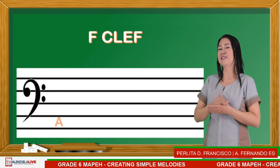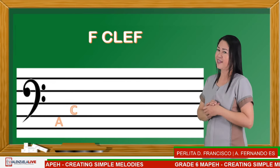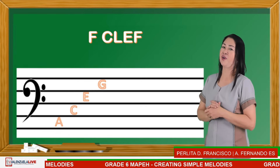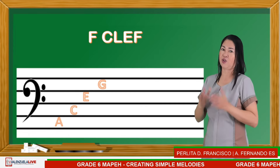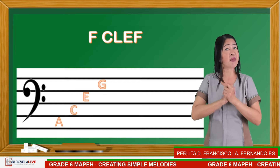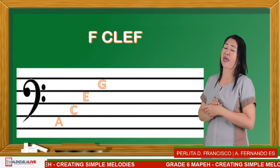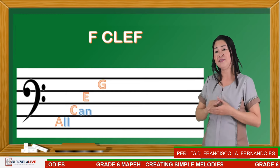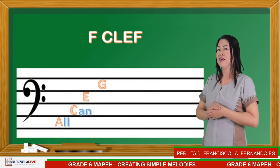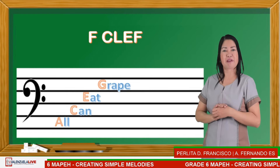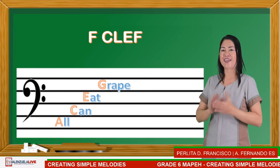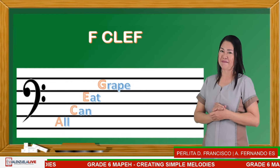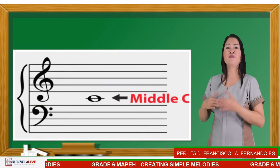For the spaces of the bass clef: first space — A, second — C, third space — E, fourth space — G. To easily remember these, we use: All Cows Eat Grass.